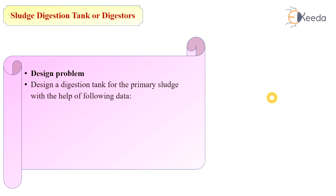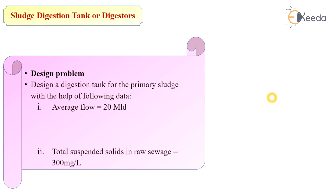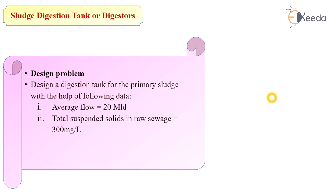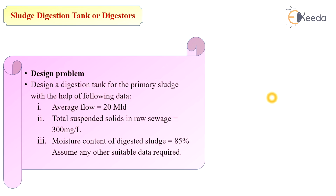Now let's look at the design problem. Design a digestion tank for a primary sludge with the help of the following data: the average flow is 20 million liters per day, total suspended solids in raw sewage is 300 mg per liter, the moisture content of digested sludge is 85%, and assume any suitable additional data.